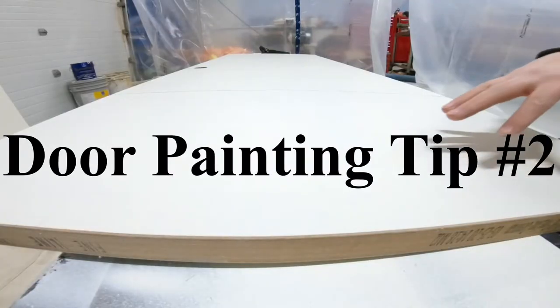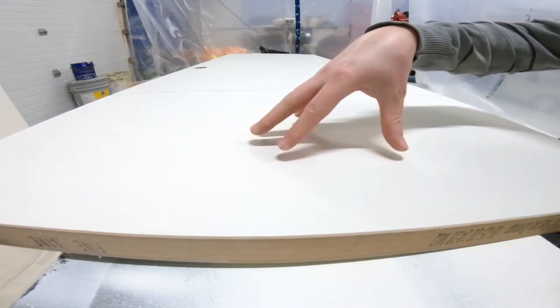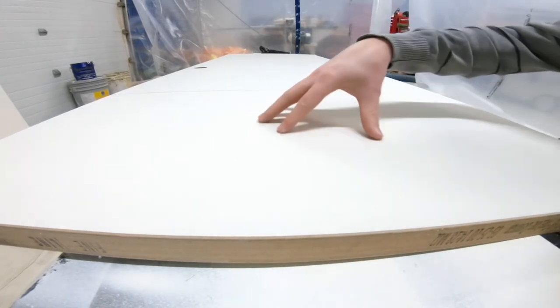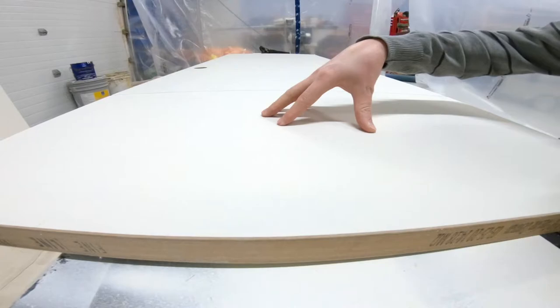My second tip for getting great results when you're painting doors is to give it a light sand. Now if you've got a textured finish door then obviously you don't want to be sanding too much or you're going to get that textured finish off.